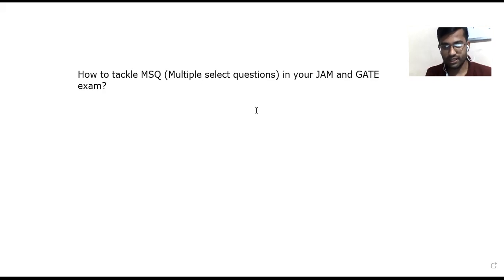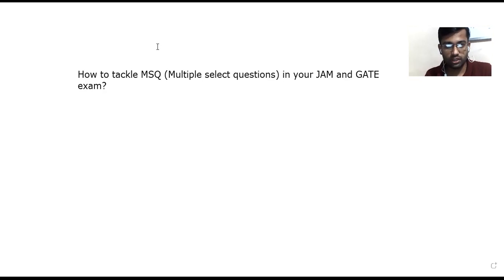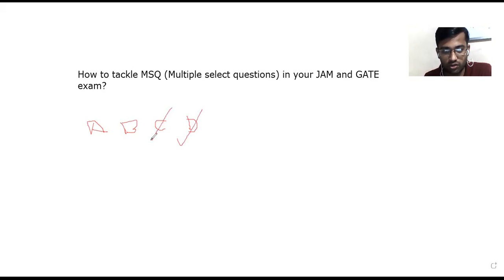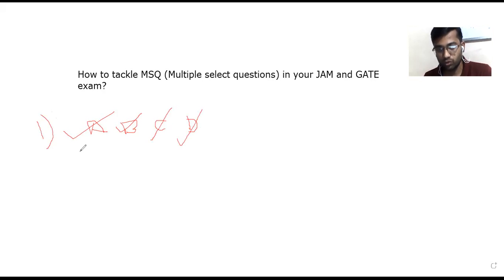If you don't know the correct answer, then just go for the identification of the wrong answers. So, let's say from options A, B, C, and D — let's try to find out the wrong answer. If D is wrong and C is wrong, then automatically A and B will be your right answers. Just try to find out the wrong answer first, and the remaining answers will be your correct answers.